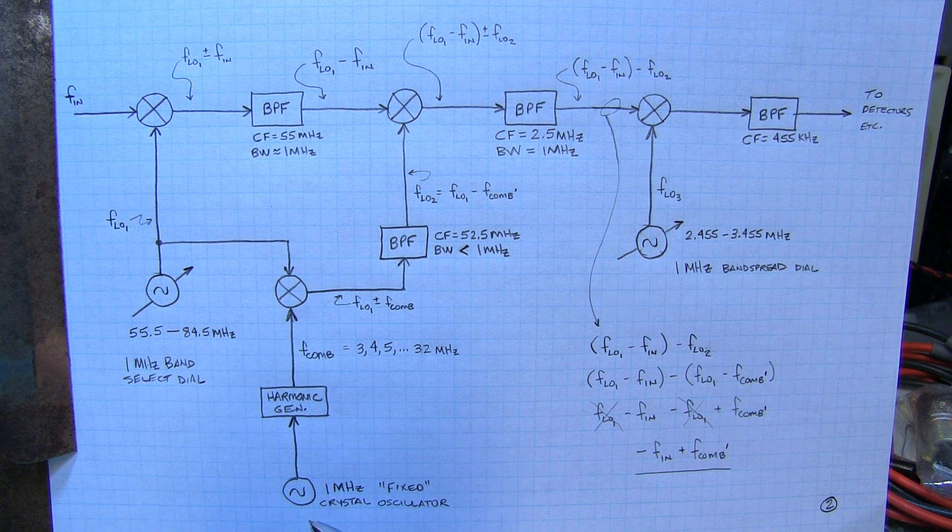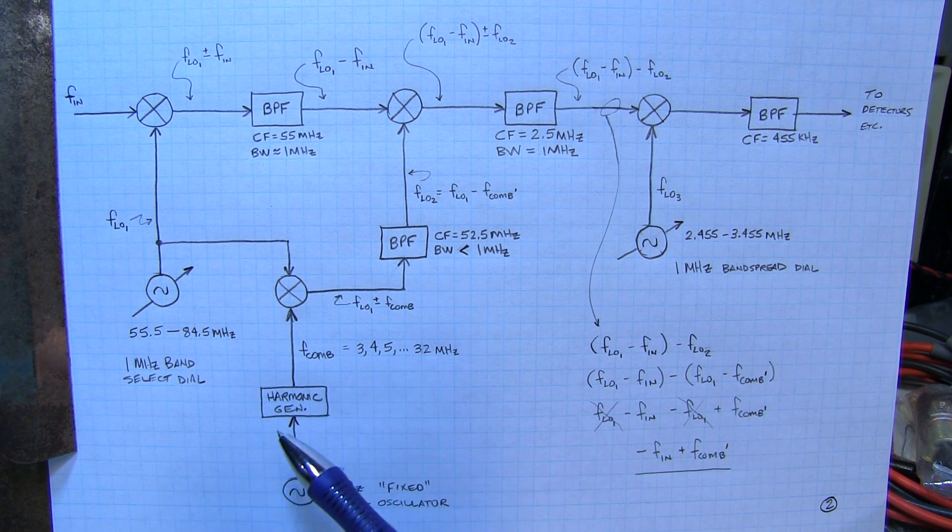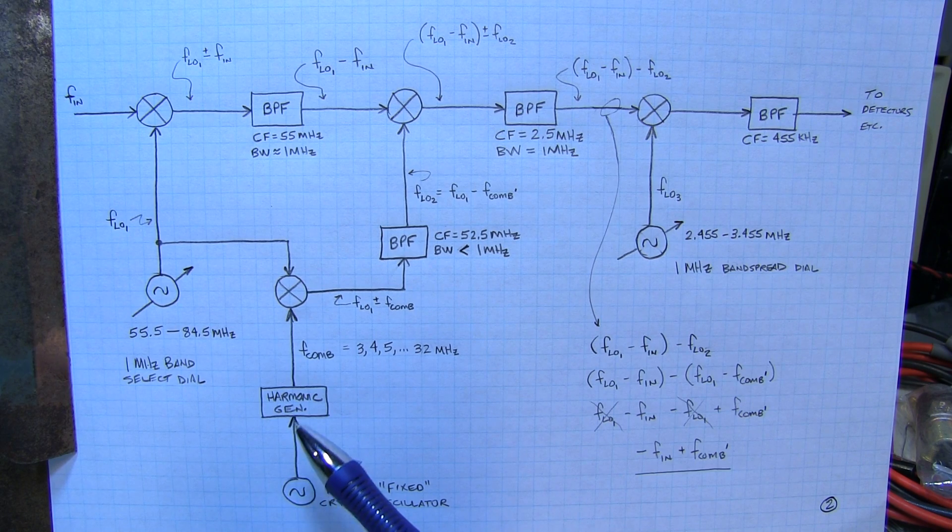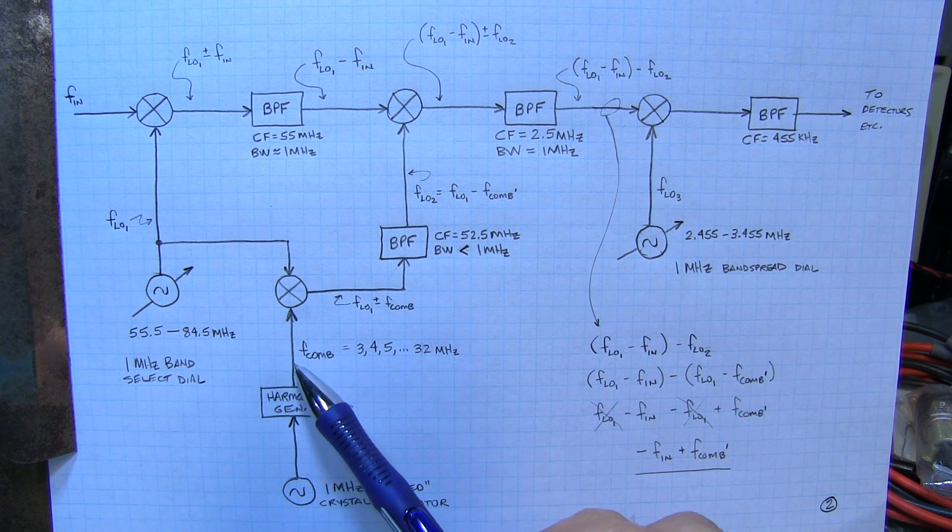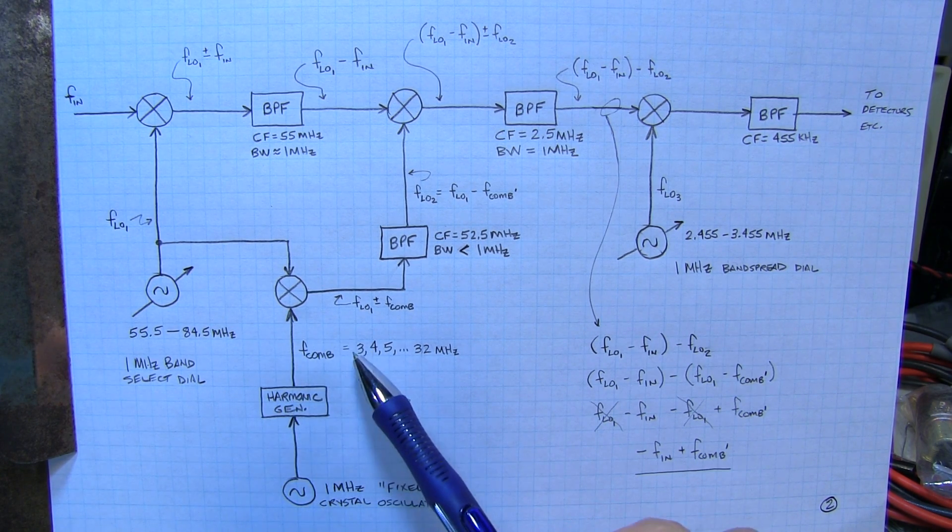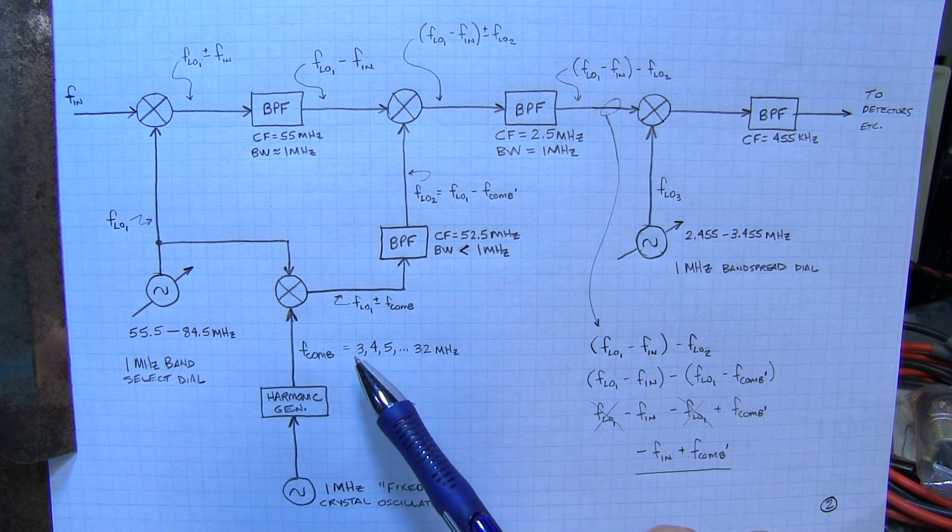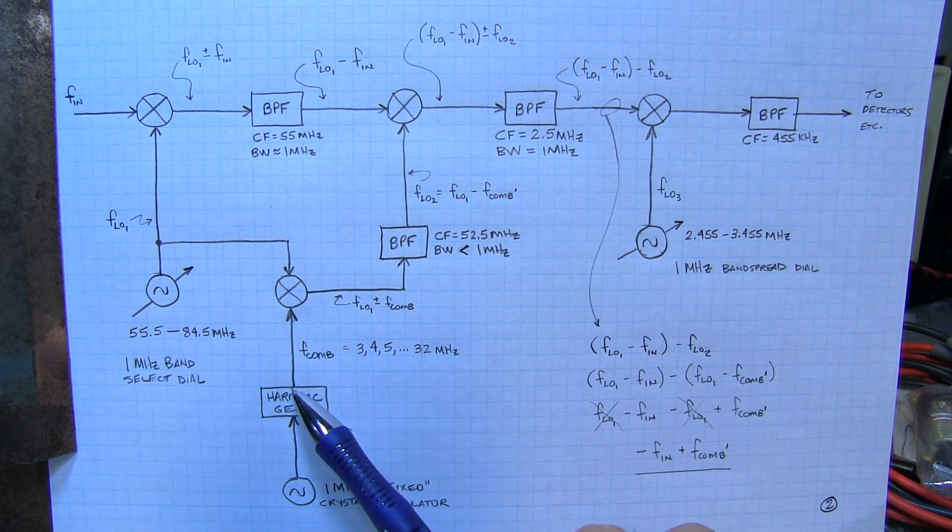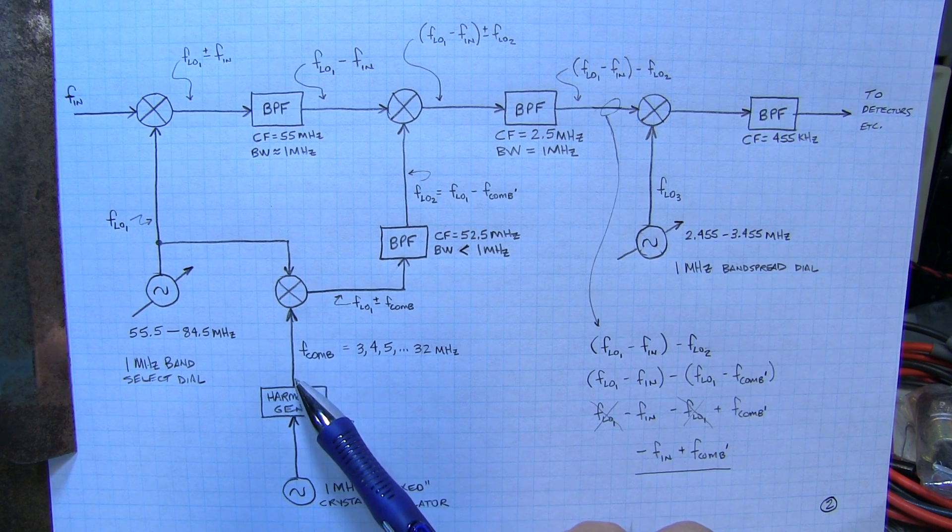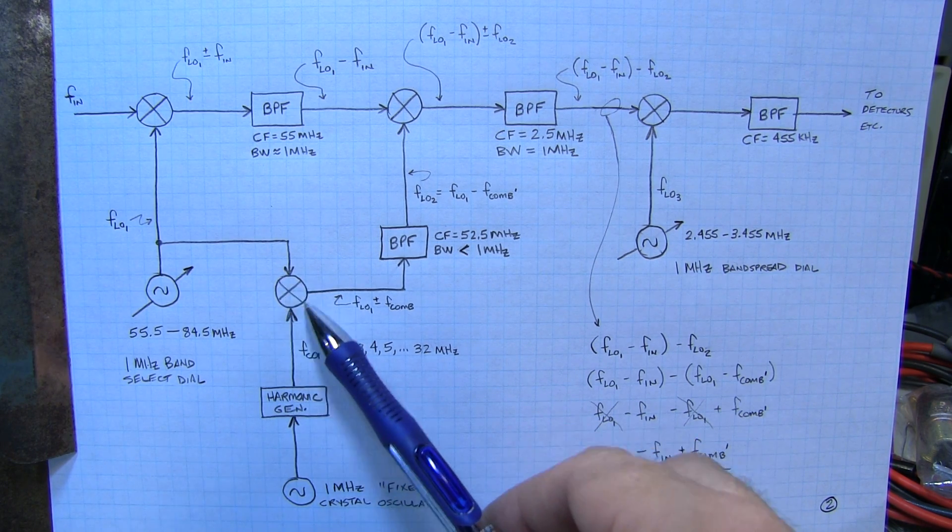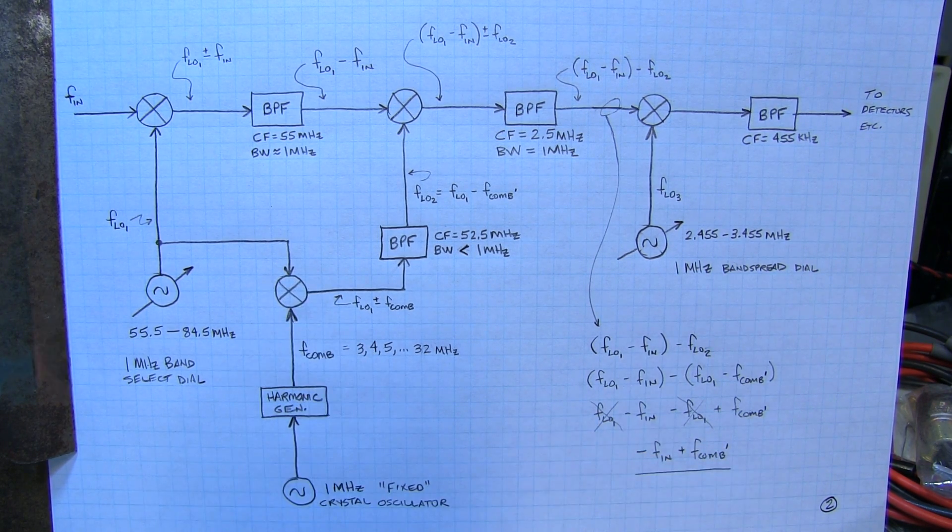That harmonic generator takes that single frequency 1 MHz output and outputs essentially a comb of frequencies at every harmonic of that 1 MHz frequency up to and a little bit past 30 MHz. So the output that comes here is at 1 MHz, 2 MHz, 3 MHz, 4 MHz, 5 MHz, 7 MHz, etc., up to at least 32 MHz.